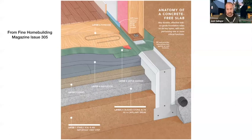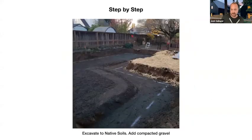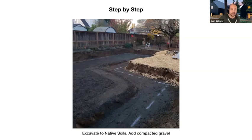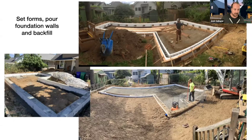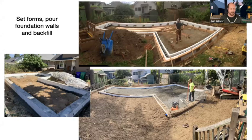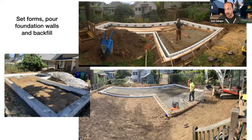We've done three concrete-free slab-on-grade projects and are currently working on our fourth. Step one is straightforward: excavate down, throw down your gravel, compact it, and get it ready for footings and stem walls. Step two: set your forms, pour your foundation walls, then backfill. In this case we used ICFs. Then we fill the interior part of the foundation with three-quarter-inch gravel — use gravel with no fines so it won't get clogged and wick water up, making a proper capillary break. There's really not much difference here compared to a regular stem wall and footing so far.